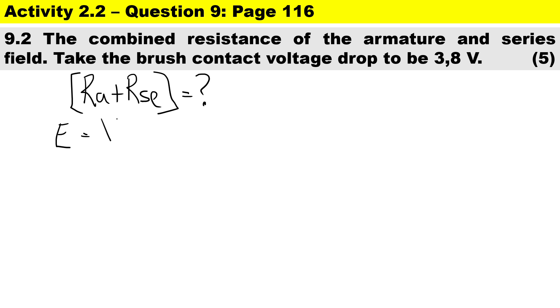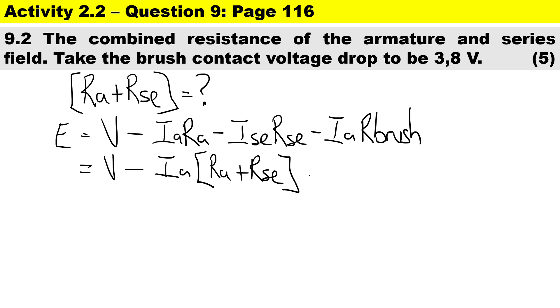First of all let's write down the emf equation for a series motor. It is always minus for a motor, so it's going to be V minus Ia*Ra minus Isc*Rsc minus Ia times the brush contact resistance. Now just using a little bit of mathematics we'll simplify this by saying V minus Ia, remember current stays the same in series, and we will have Ra plus Rse minus the brush contact voltage which is 3.8 volts.